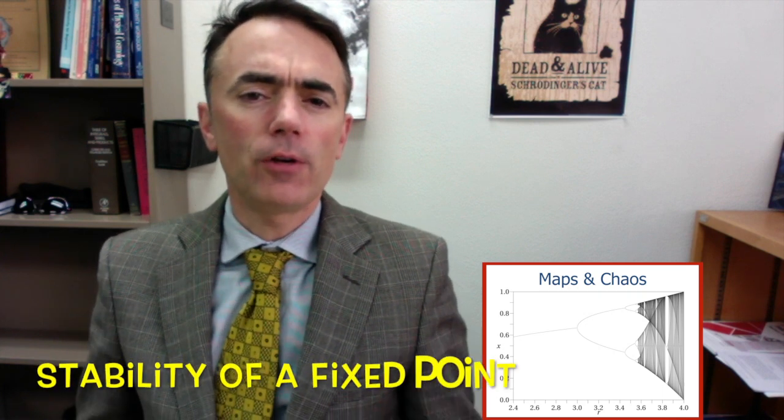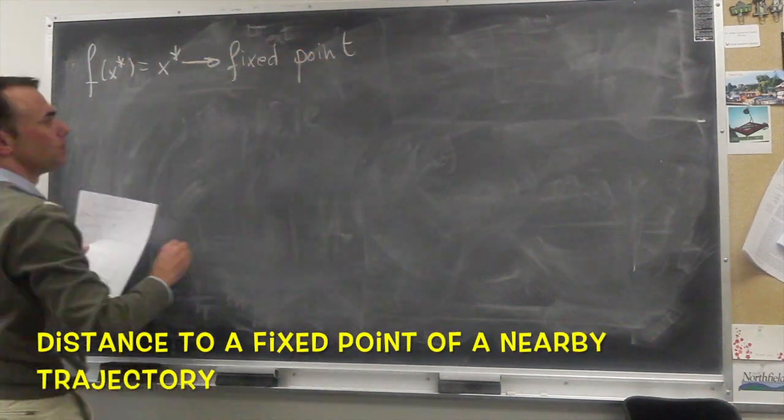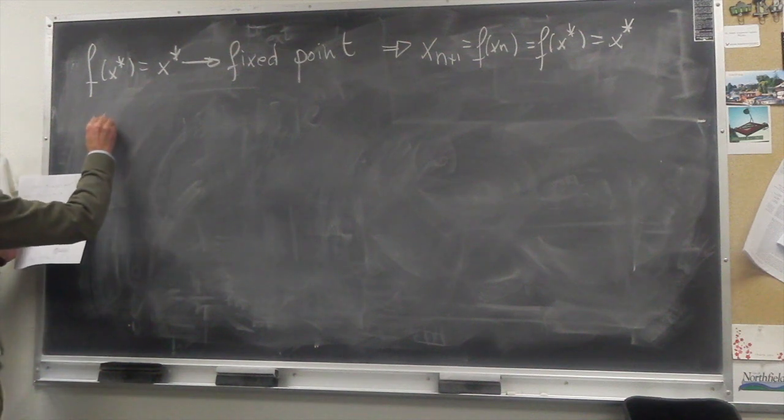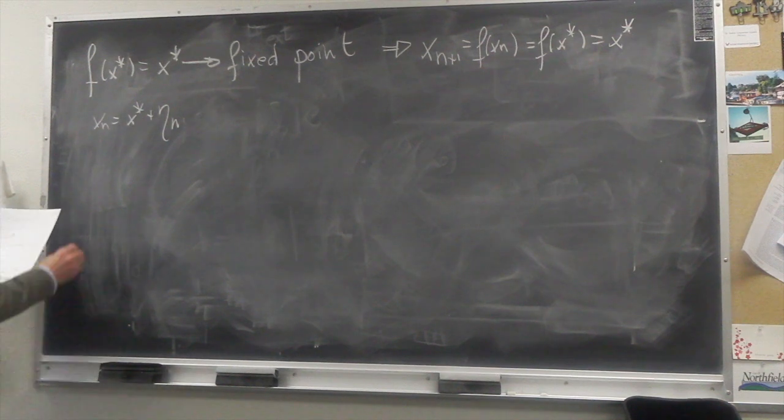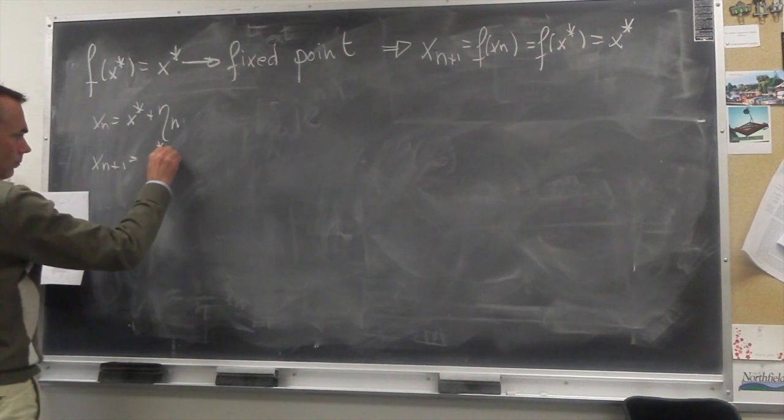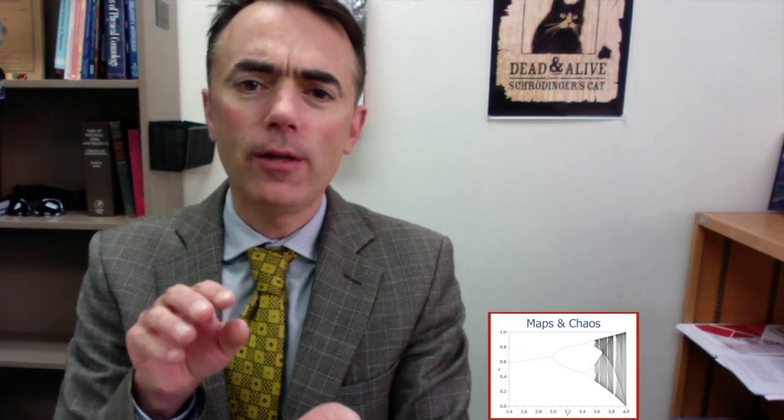We can study the stability of fixed points. Let us calculate the distance of a nearby trajectory to a fixed point. The nth iteration of a nearby trajectory will be x star plus a small amount eta sub n. Eta sub n is the distance to the fixed point at the nth iteration. We want to know if the orbit is attracted or repelled from x star, which is the same as asking if the distance eta sub n decreases or increases.